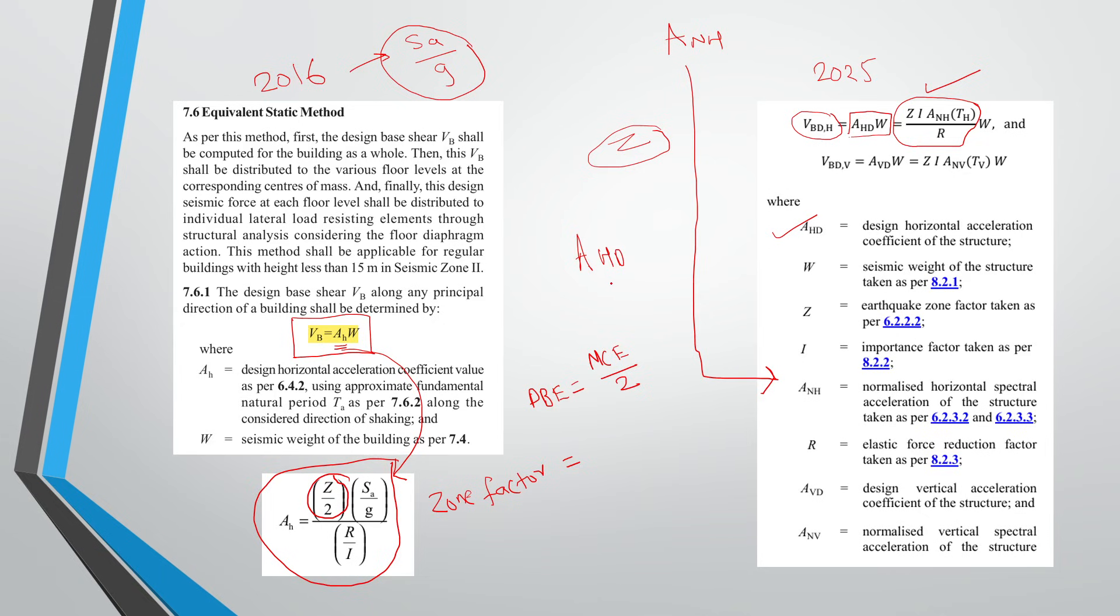That is Z by 2. But in IS 1893 2025, ANH, this is very important, this ANH is normalized to the peak ground acceleration, or it is normalized to the local hazard. And the design equation consists of Z, that is full peak ground acceleration.